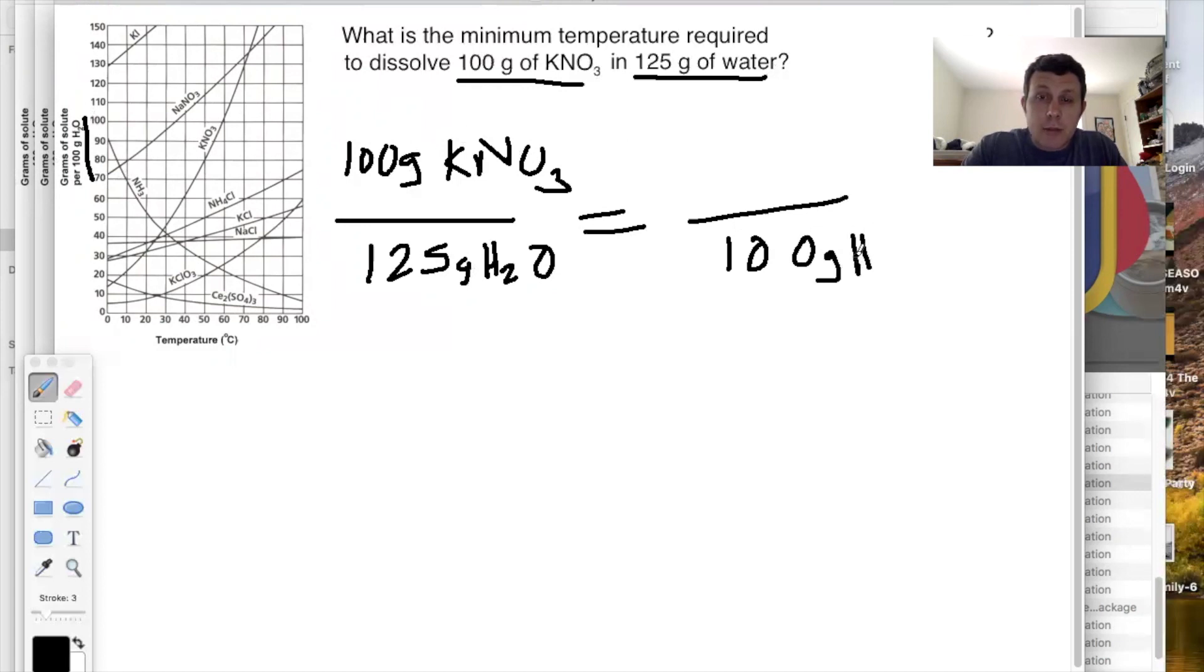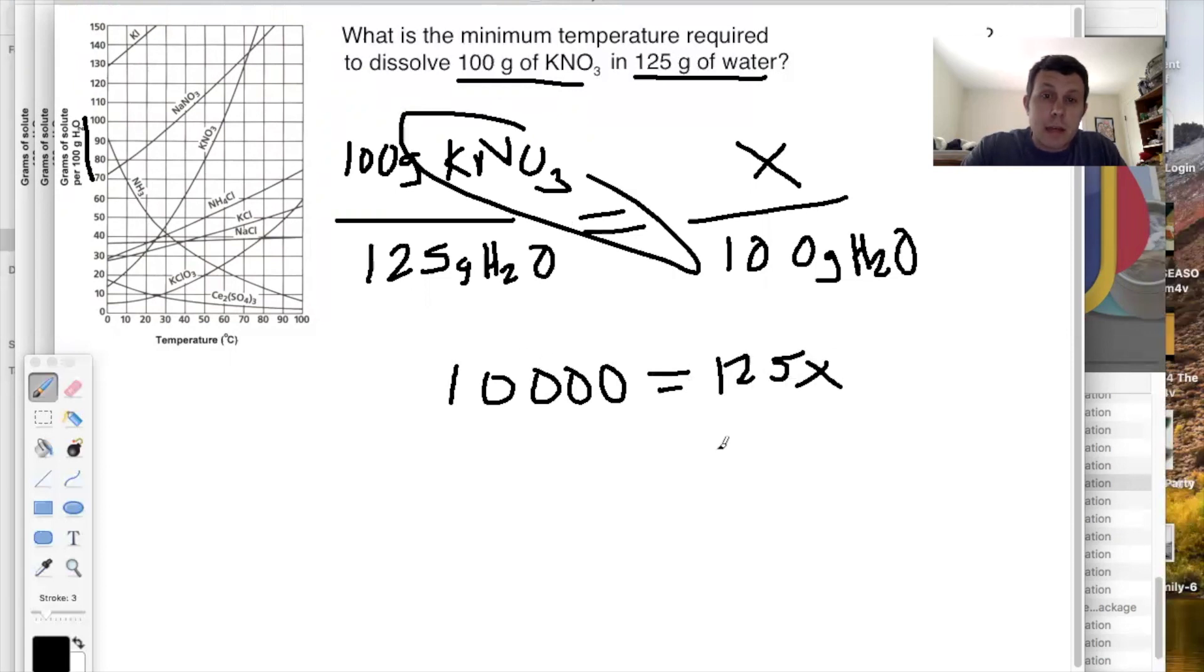So yeah, it's great that that much can dissolve in 125, but how much can dissolve in 100? So again, I'll cross multiply and divide. So this would be 10,000 equals 125x. When I cross multiply, that is. Then I divide each side by 125, I should get x equals 80 grams.